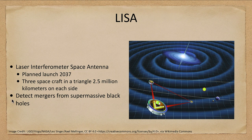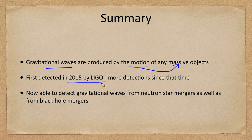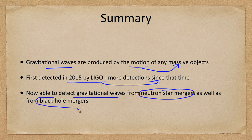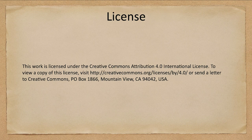In summary, gravitational waves are produced by the motion of any massive objects, but it is high-mass objects moving quickly that produce the strongest waves. They were first detected in 2015 by LIGO, and there have been dozens of detections since, including both neutron star mergers and black hole mergers. Continued studies will give us further insight into these very massive objects. That concludes this lecture on gravitational wave astronomy — we'll be back next time for another topic in astronomy. Have a great day everyone and I will see you in class.